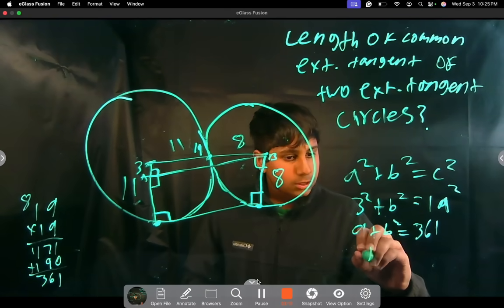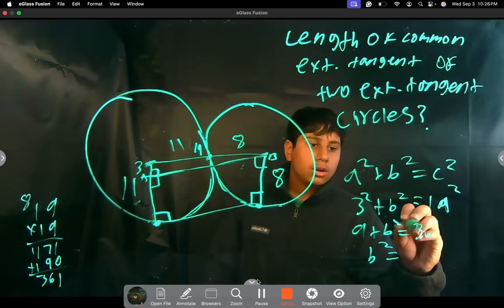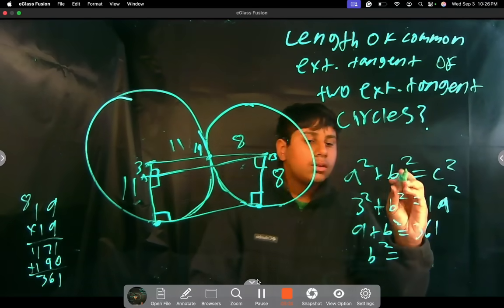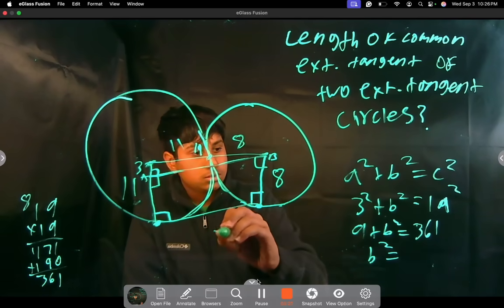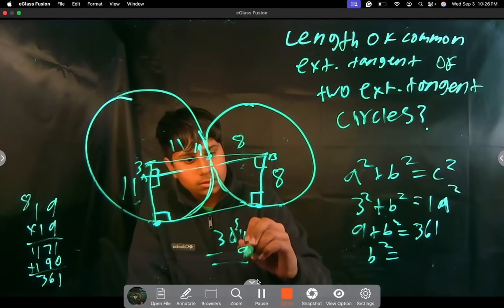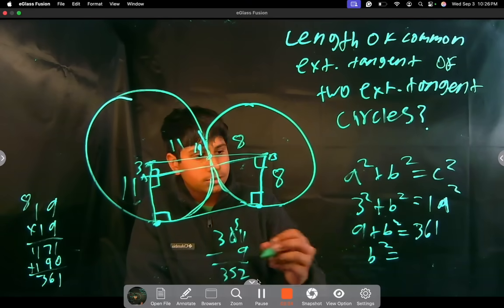So now B squared is equal to 361 minus 9, which is 352.